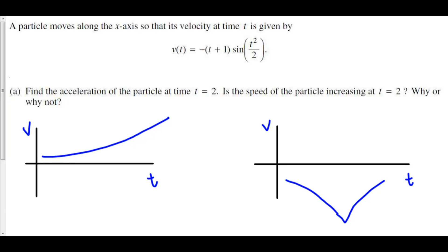A particle moves along the x-axis so that its velocity at time t is given by negative quantity t plus 1 times sine of quantity t squared over 2. Find the acceleration of the particle at time t equals 2. Is the speed of the particle increasing at t equals 2? Why or why not?